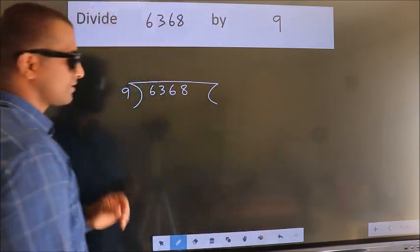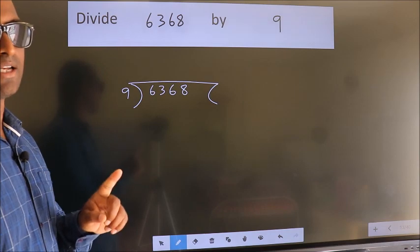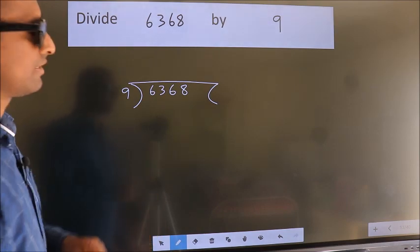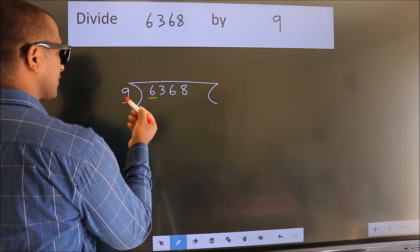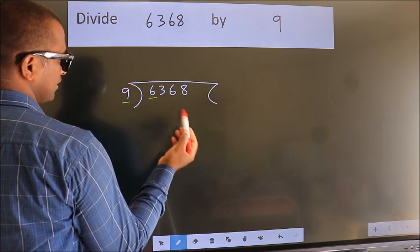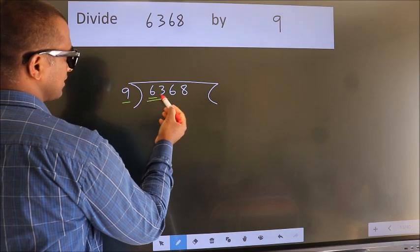This is your step 1. Next, here we have 6, here 9. 6 smaller than 9. So, we should take two numbers, 63.